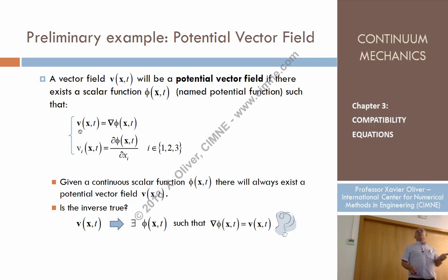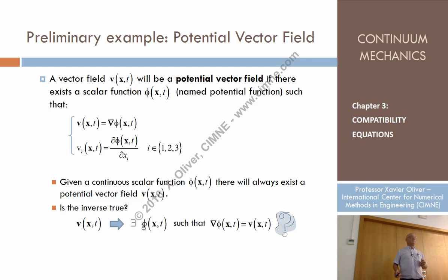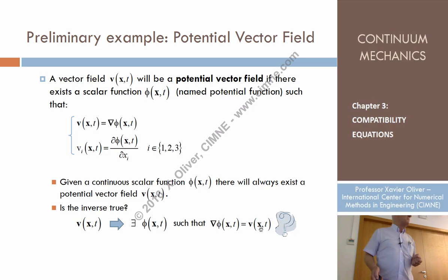But we can state the opposite problem. Given a certain vector field — I invent just three components, functions of x, y, z — does there exist a scalar field phi such that the gradient of phi provides B? The answer is, in general, no.